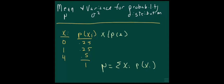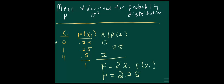So in the first one, it's 0 times 0.25. And then 1 times 0.25. And then 4 times 0.5. And the sum of all of that is equal to 2.25. That is the mean of this probability distribution. I just took each x — like in the first one, 0 — times its corresponding probability, 0.25. Then 1 times 0.25 is 0.25. Then 4 times 0.5 is equal to 2. Then add those up: 0 plus 0.25 plus 2. And that will give you the population mean for a probability distribution.